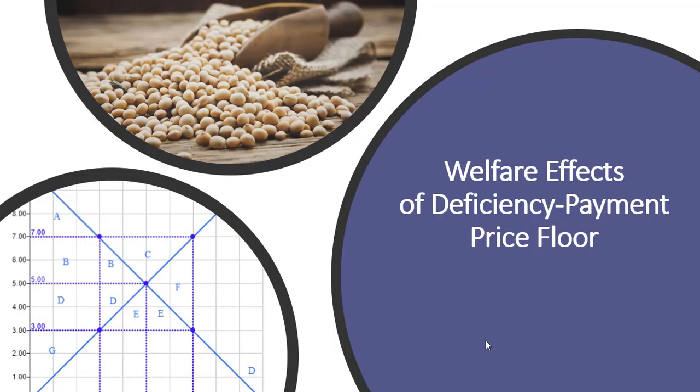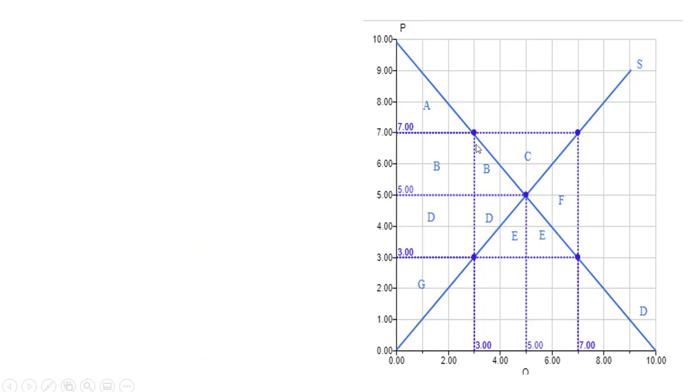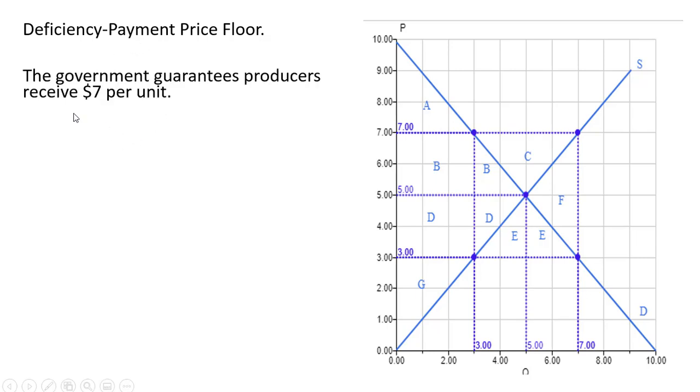Hello. In this video, we're going to look at the welfare effects of deficiency payment price floor. So here's our market. Downward sloping demand, upward sloping supply. And we're going to impose a deficiency payment price floor. The government guarantees producers receive $7 per unit. So that's what the $7 coming across horizontally is representing.